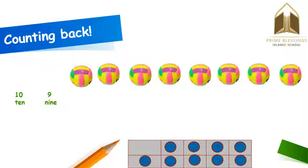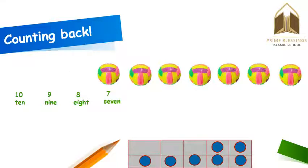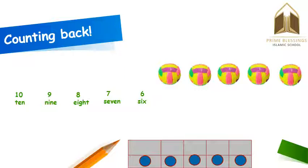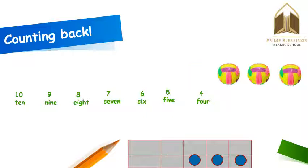If I take away one more ball, then how many balls are there? There are eight balls. If I take one more ball, then how many balls are there? There are seven balls. If I take one more ball, now how many balls are there? There are six balls. If I take one more ball, then how many balls do you see? Here are only five balls. If I take one more ball, now how many balls are there? There are four balls. If I take one more ball, now how many balls do you see? There are three balls.